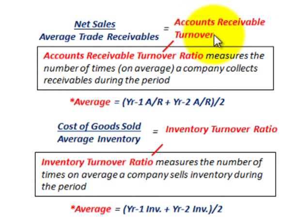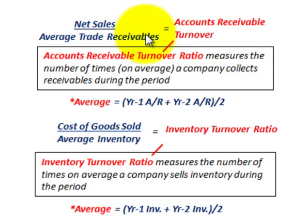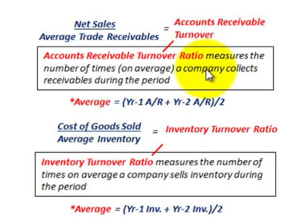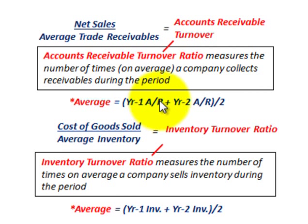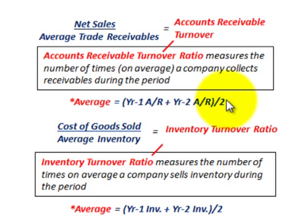Now let's look at the accounts receivable turnover ratio — that is net sales divided by average trade receivables. This ratio measures the number of times on average a company collects receivables during the period. Average receivables are calculated by taking year one accounts receivable plus year two accounts receivable from a comparative balance sheet and dividing by two.